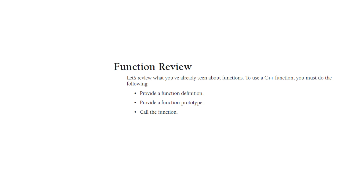Here are the three things you need to do in order to use functions. First, you have to provide a definition — you have to tell me what does that function do, what are the actual lines of code that this function will execute when you call it. The second is you need to provide a prototype, which means you have to describe ahead of time what that function looks like so that people — meaning other programmers on your project — will see that prototype and understand via the name, the arguments passed in, and the return type the general shape of what that function will do.